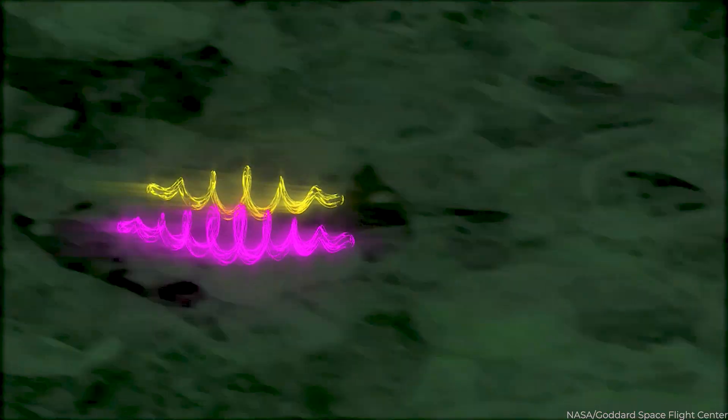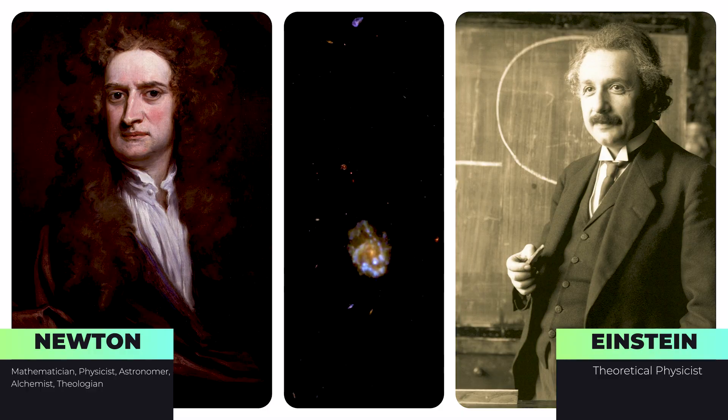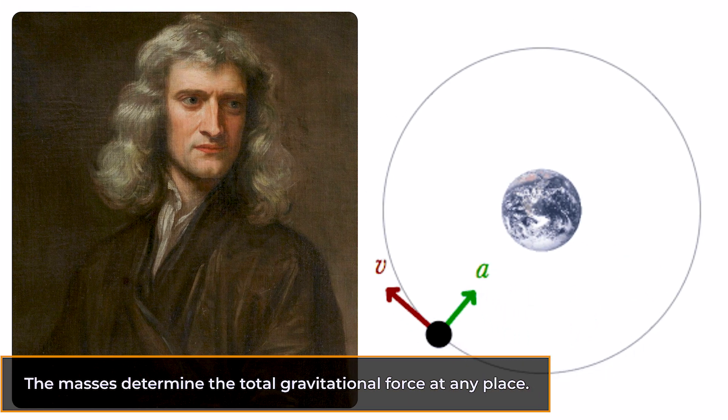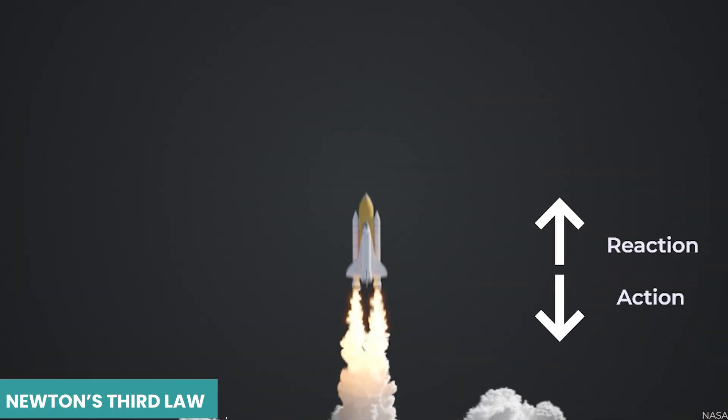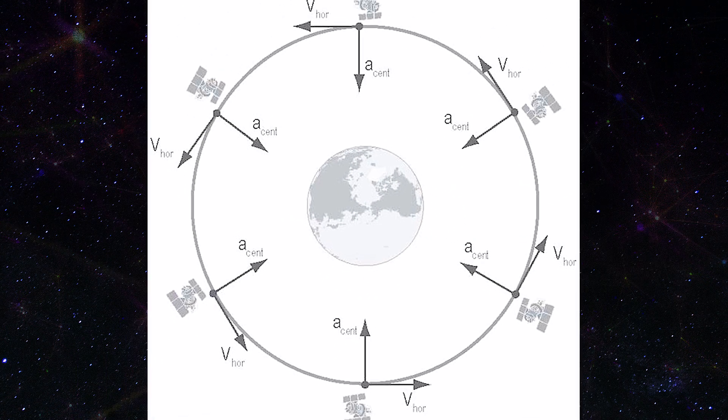The road from gravitational masses to particle pathways is circuitous in Newton's and Einstein's space-time theories. In the Newtonian formulation, the masses determine the total gravitational force at any place, which determines the particle's acceleration according to Newton's third law. The exact route is determined by solving a differential equation.